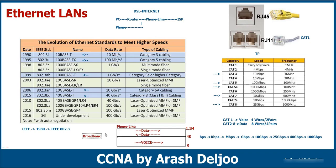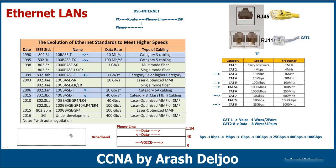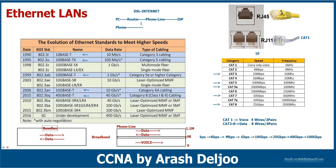Broadband connections are not the topic we need in CCNA — that belongs to service provider courses. In a LAN, we use the entire frequency range of a cable for sending data, with no frequency division. Because of that, we call it baseband communication. So when you say 10BASE-T, it means 10 megabit per second, baseband technology, using twisted pair.